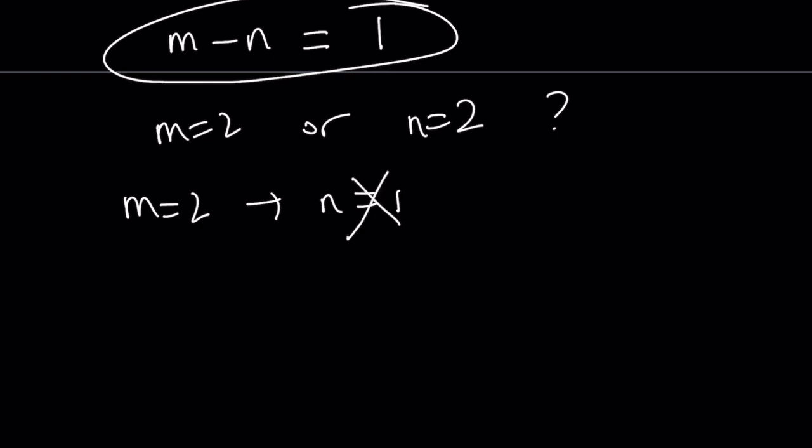So let's look at the second case, n equals 2. If n is equal to 2, then m is equal to 3 because their difference has to be 1 and m is larger than n. And this works.